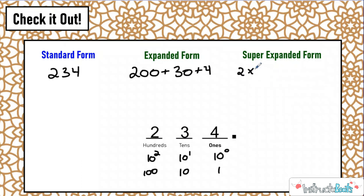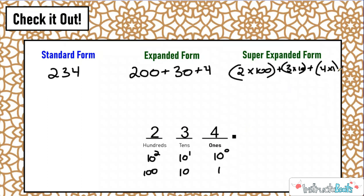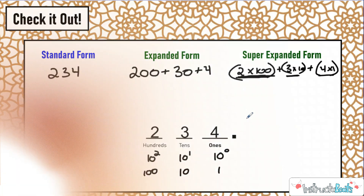For instance, instead of writing 200, you write two groups of 100, because it's in the hundreds place. Then you add that to three groups of 10. Then the four — we multiplied that by one because it was in the ones place, so four times one. In super expanded form, you just show the digit and then the factor you are multiplying it by. It really goes back to our positional place value understanding.